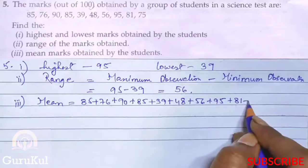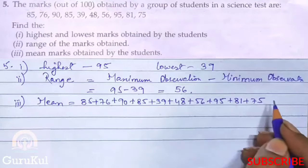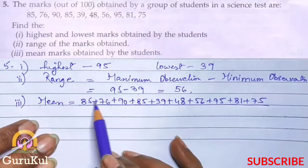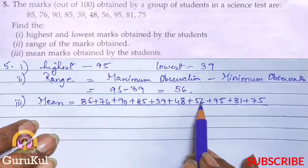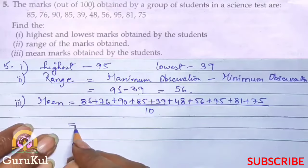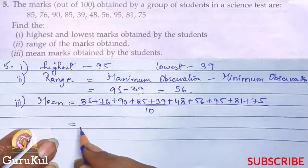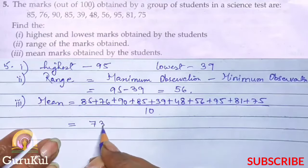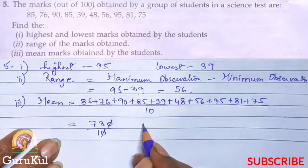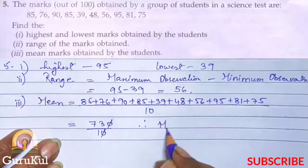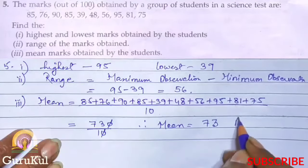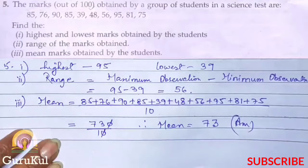Divided by number of observations which is 1, 2, 3, 4, 5, 6, 7, 8, 9, 10, right? So adding all these our answer is 730 divided by 10. 0 and 0 gets cancelled. So therefore mean is equal to 73. So this is the answer.